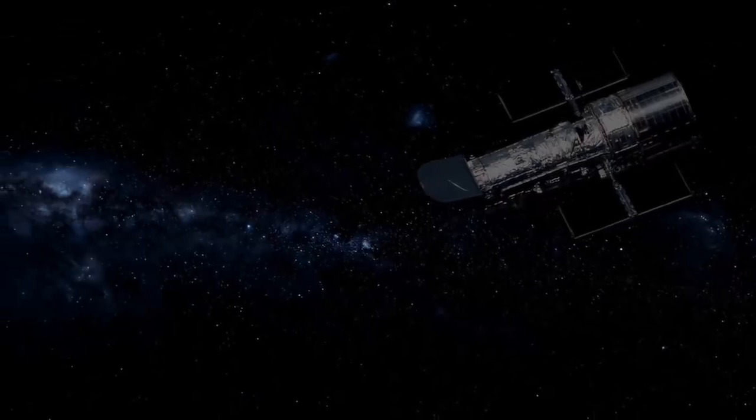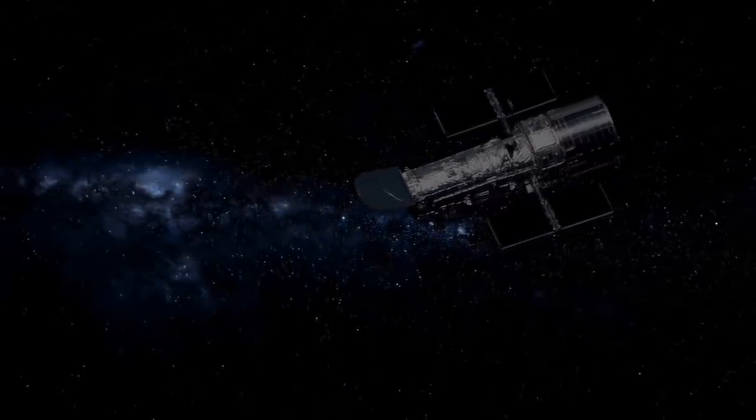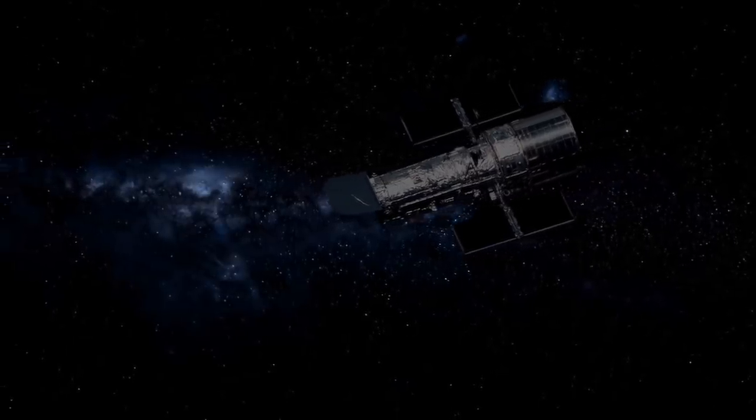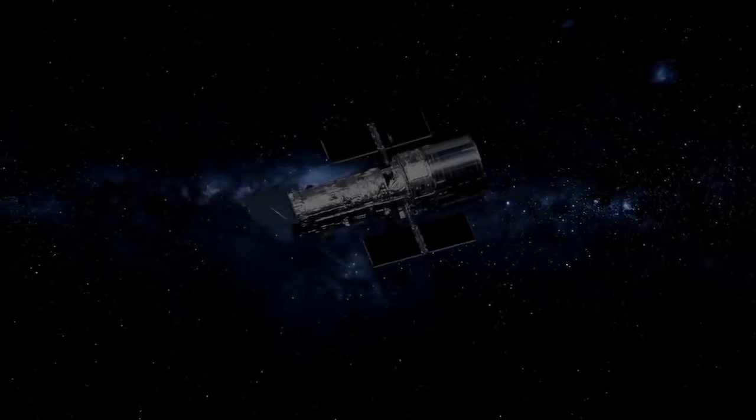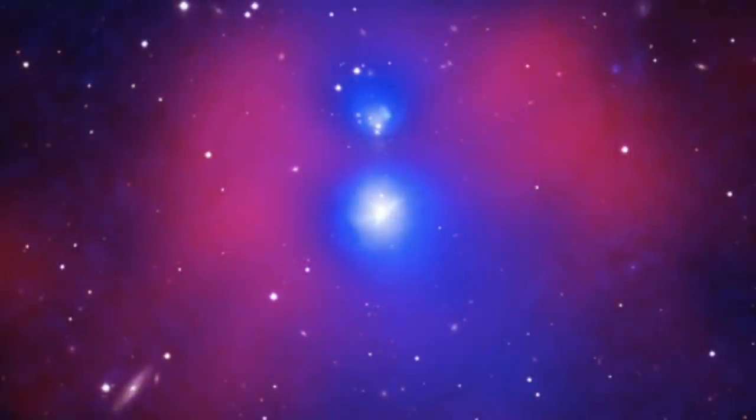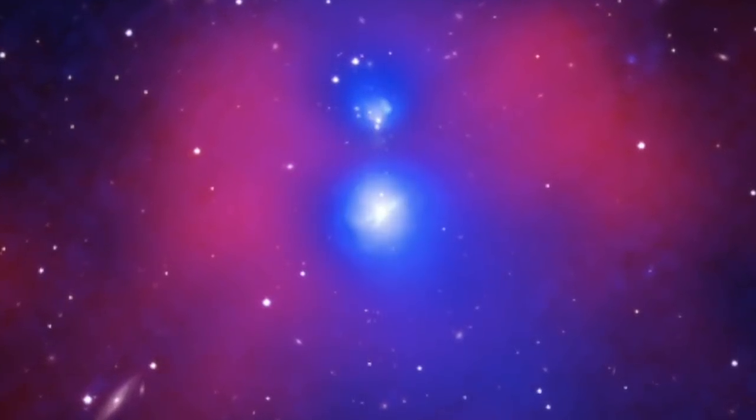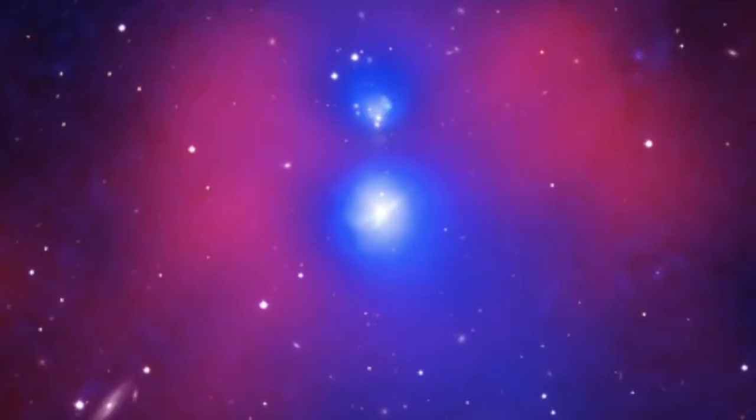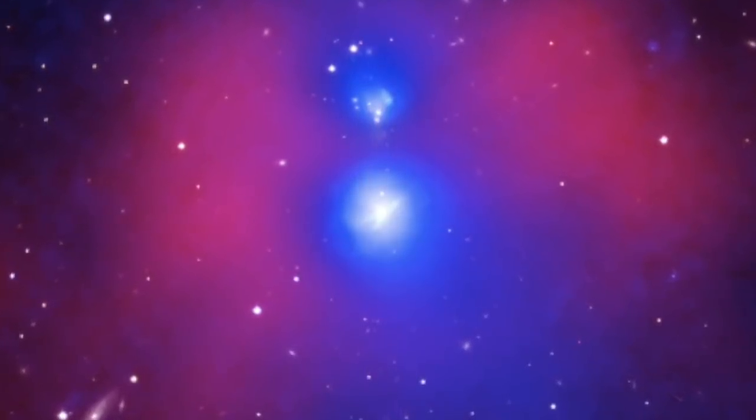NASA have managed to capture an incredible event out in the vastness of space. The researchers used the Chandra X-ray Observatory, the European Space Agency's XMM-Newton, and optical observations. This allowed them to look deep into space and observe two massive galactic clusters heading towards each other at incredible speeds. In fact, the team behind the study suggested the two clusters were moving towards each other at speeds exceeding 4 million miles per hour.